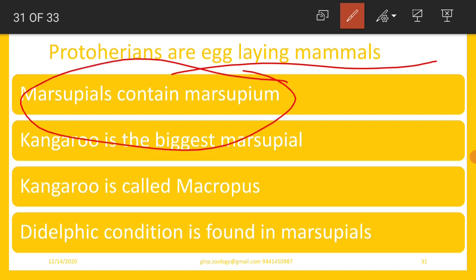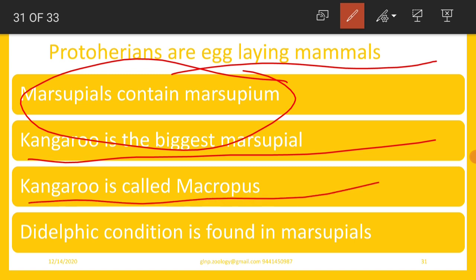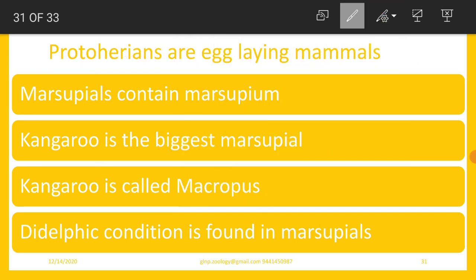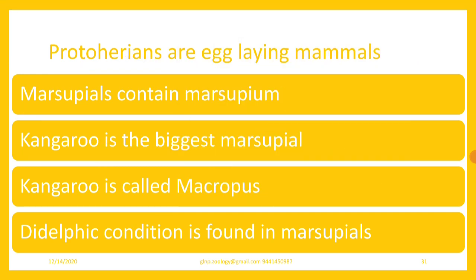Marsupials are represented by the kangaroo, which is the biggest marsupial. Kangaroo is called Macropus, and the didelphic condition is found in marsupials. Marsupials are confined only to Australia, and prototherians are also confined to Australia. As a result, Australia is called the land of archaic mammals and also the land of marsupials.